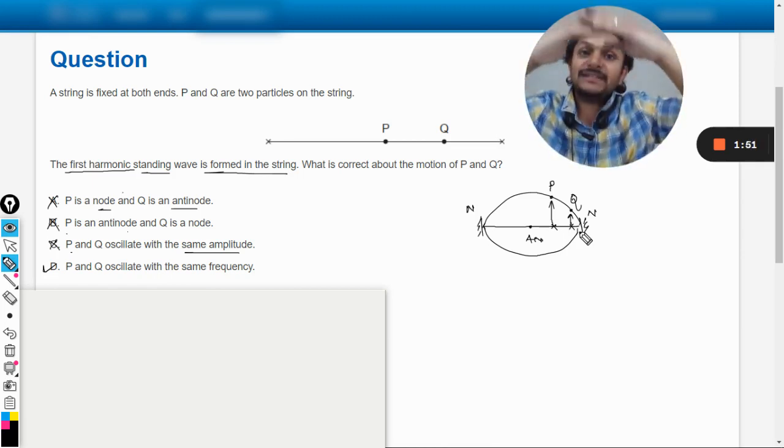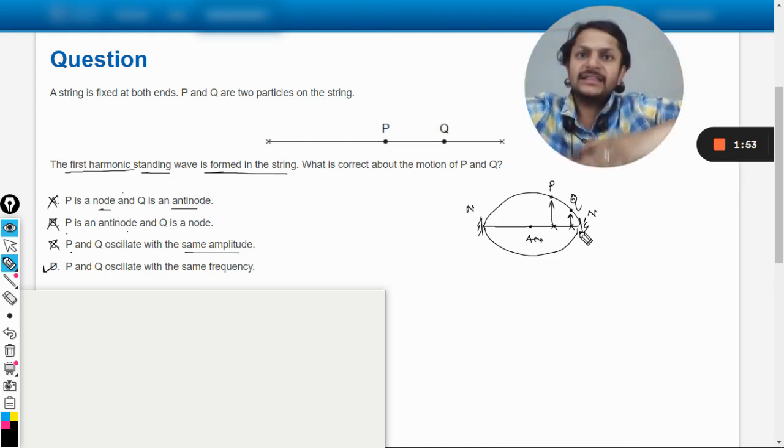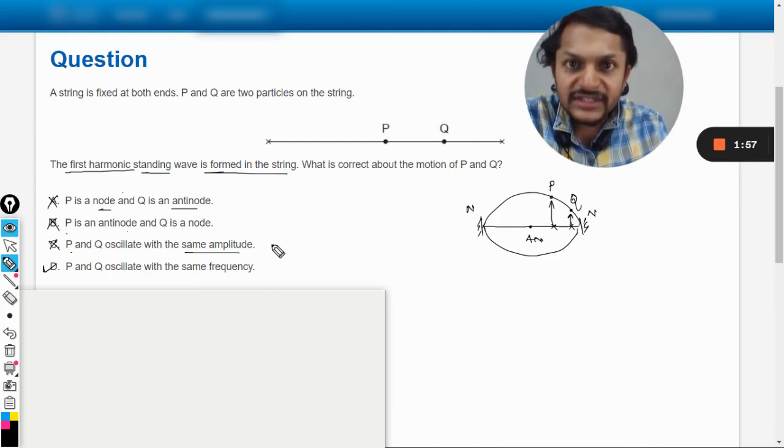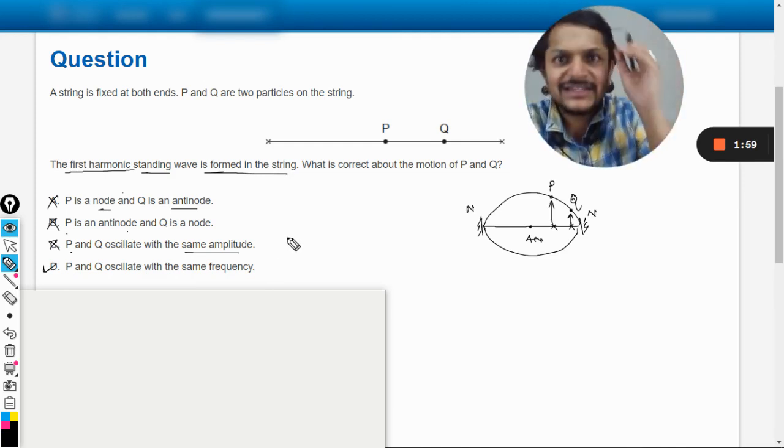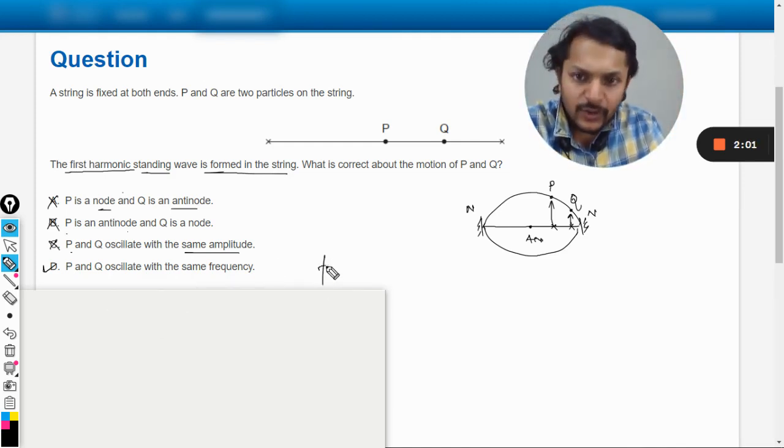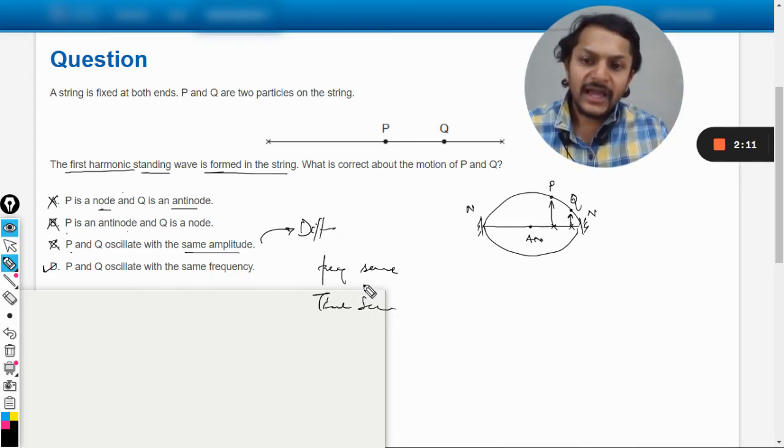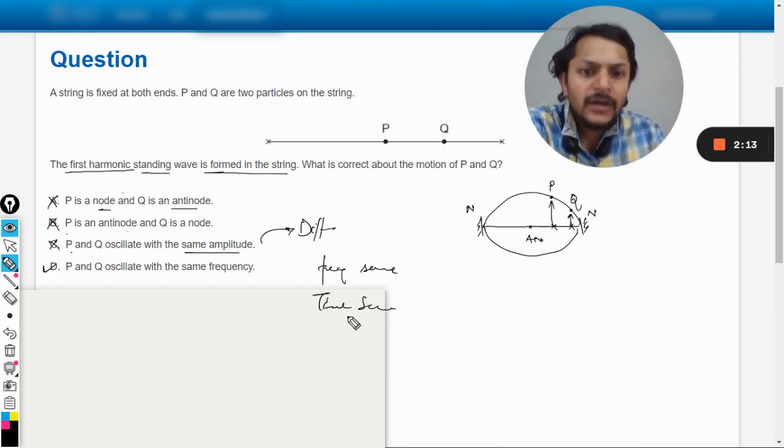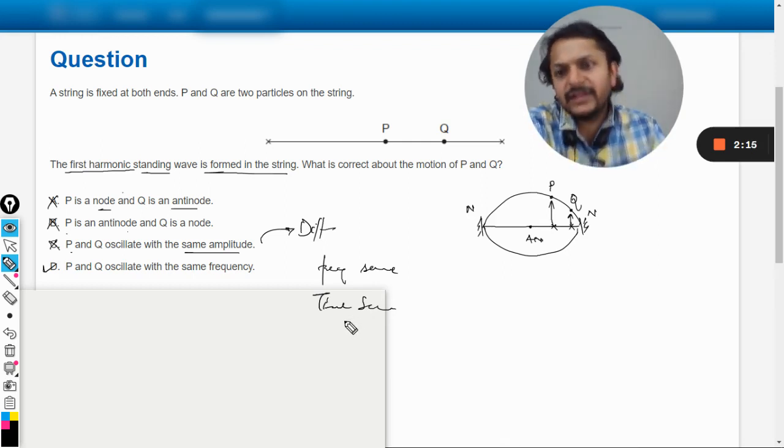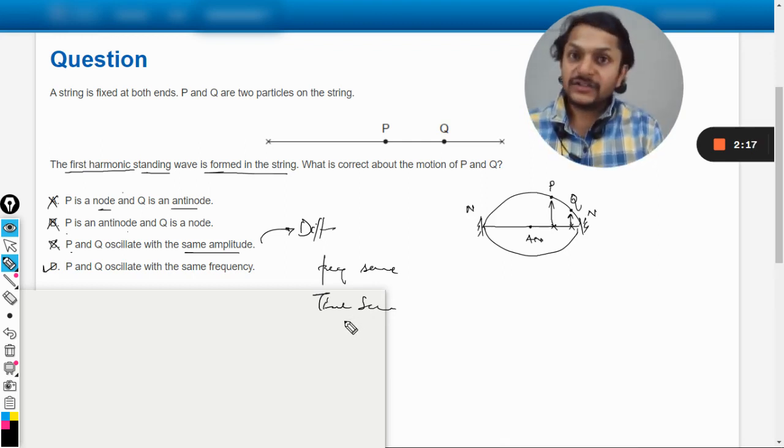They go to the trough at the same time. So basically this movement is happening like this. So they are in phase and the time period is the same, so we can say the frequency is also the same. Frequency is same, time period is same, amplitude is different. And the answer will be D for this question.